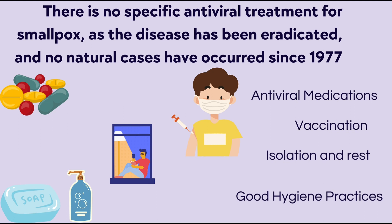There is no specific antiviral treatment for smallpox, as the disease has already been eradicated and no natural cases have occurred since 1977. However, since the world is unpredictable, if you see something unusual you need to consult your doctor first. The doctor will give you antiviral medication, and before that will recommend vaccination. Go to the nearest hospital and explain your problem — they will give you the vaccination.